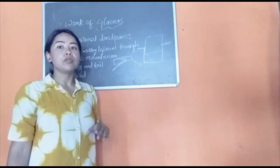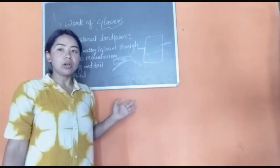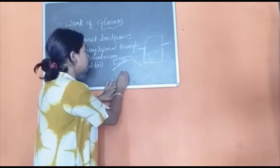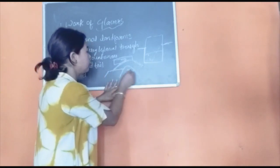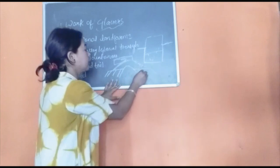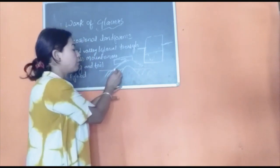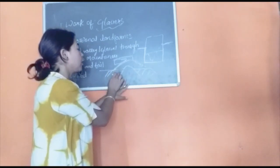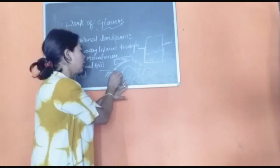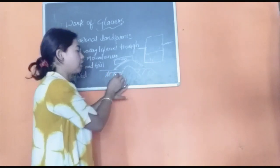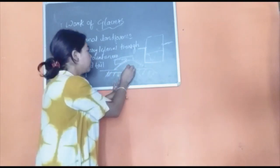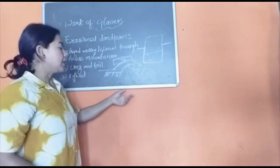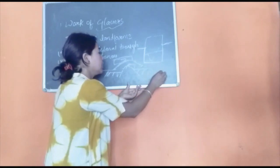Next we have crag and tail. When a glacier moves over a structure made of hard rock and soft rock, it tends to erode more of the soft rock than the hard rock. Suppose this is a hard rock and this is a soft rock — the glacier erodes more of the soft rock, whereas the hard rock remains as it is. The hard rock portion is known as the crag, and the small remaining portion is known as the tail.